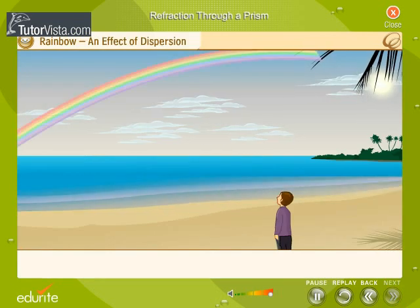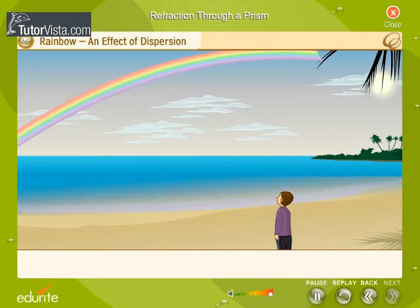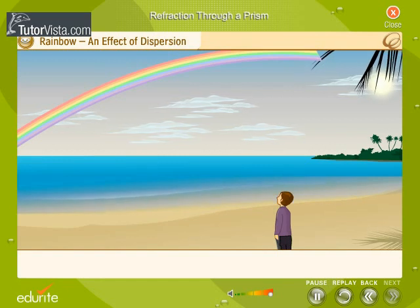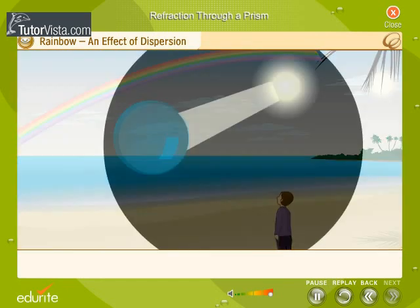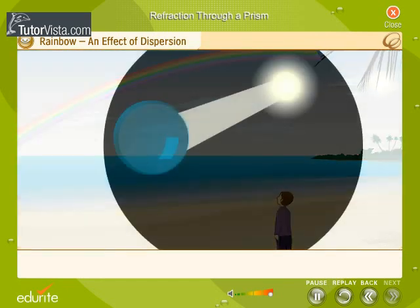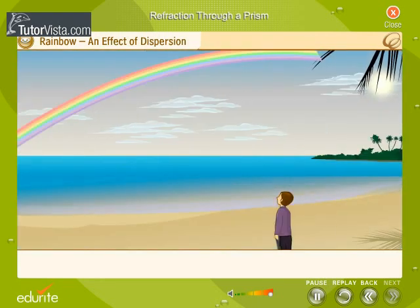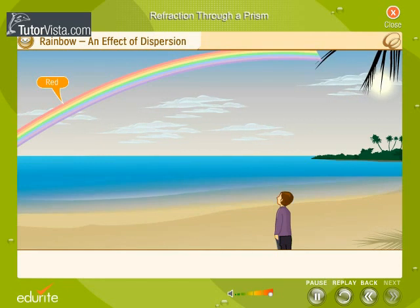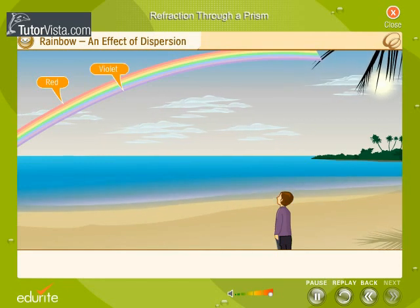A rainbow is an optical phenomenon that causes a nearly continuous spectrum of light to appear in the sky when the sun shines onto droplets of moisture in the Earth's atmosphere. It takes the form of a multicolored arc with red on the outside and violet on the inside.